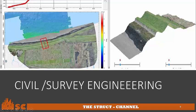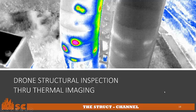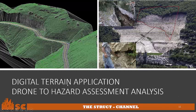Drones are used for structural inspection with thermal imaging, where you can identify points of thermal heating. Digital terrain application uses drones for hazard assessment analysis. This picture is a real image where you can notice a separation of the land mass — about two land slides — and it can be processed from drone shots.